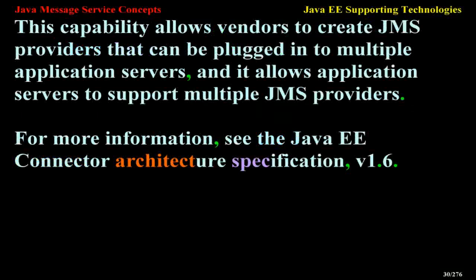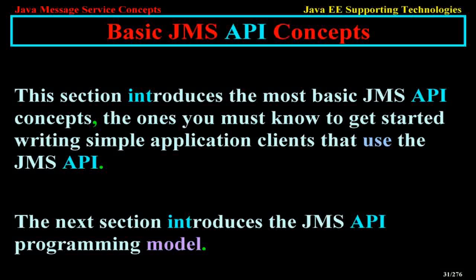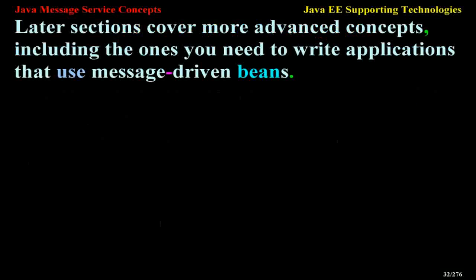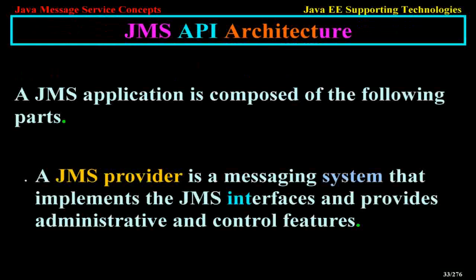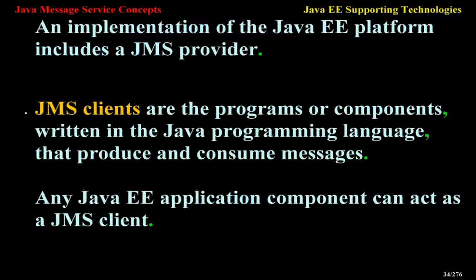Basic JMS API Concepts. This section introduces the most basic JMS API concepts — the ones you must know to get started writing simple application clients that use the JMS API. The next section introduces the JMS API programming model. Later sections cover more advanced concepts, including the ones you need to write applications that use message-driven beans. JMS API Architecture. A JMS application is composed of the following parts: a JMS provider, which is a messaging system that implements the JMS interfaces and provides administrative and control features. An implementation of the Java EE platform includes a JMS provider.